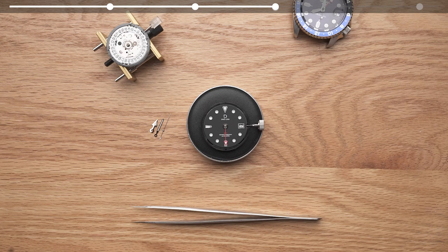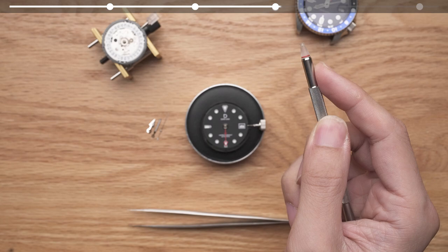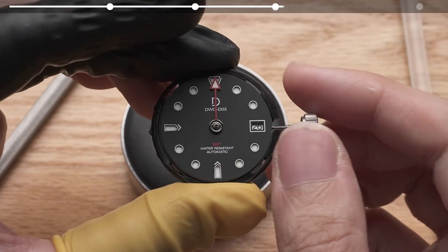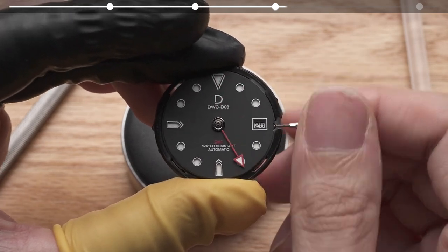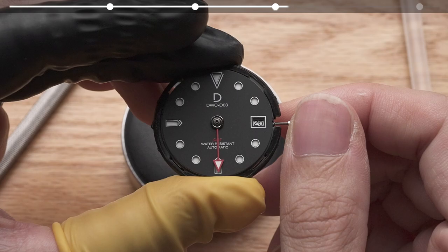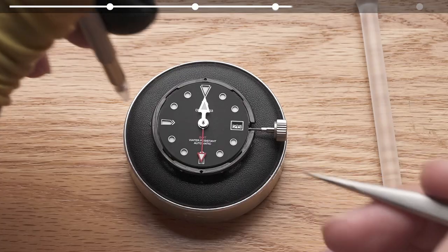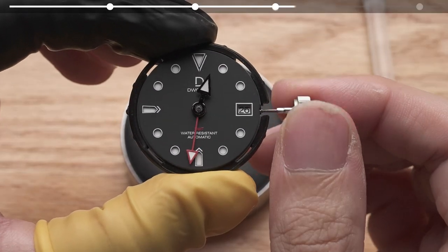Now we can install the hour hand. We'll switch to the other hand installation tool and use the tip with the larger opening. We'll advance the GMT hand forward to 6 o'clock through the time setting position. With the GMT hand pointing at 6, install the hour hand pointing at 12. Loosely attach it first, then check its alignment by advancing the time clockwise by 6 hours.